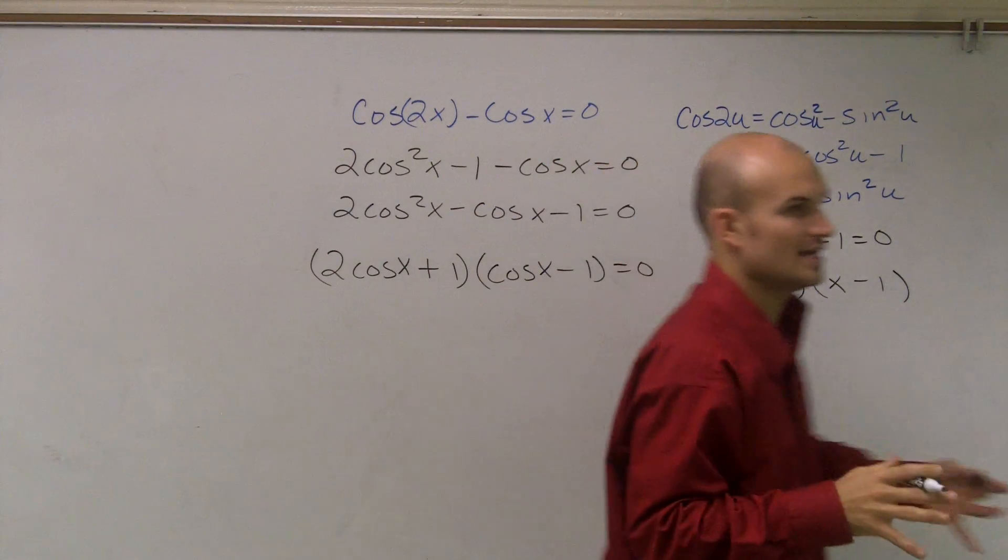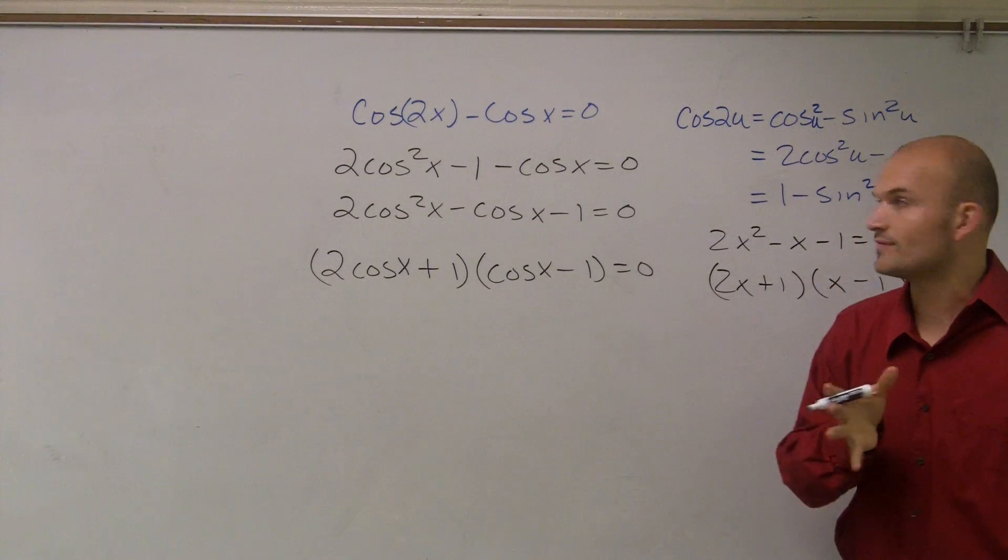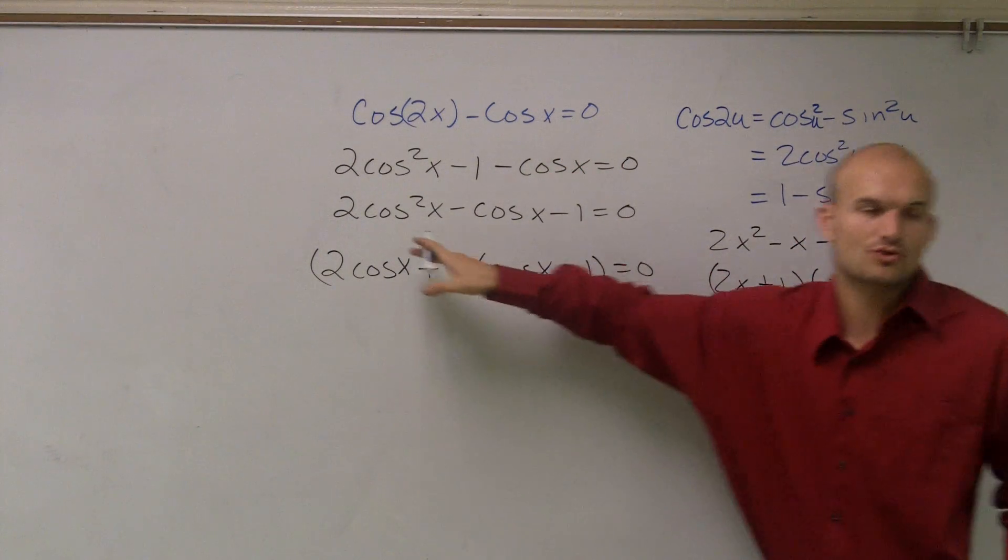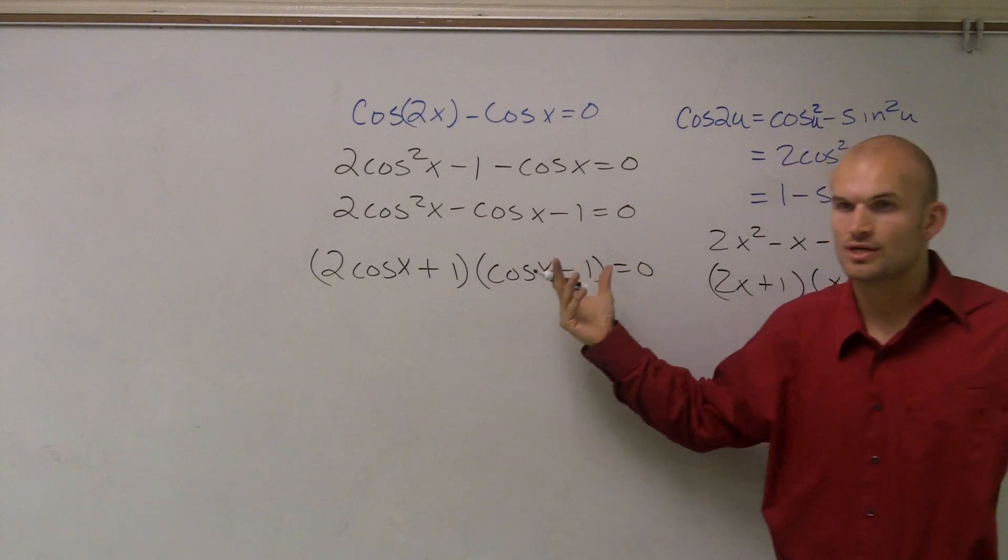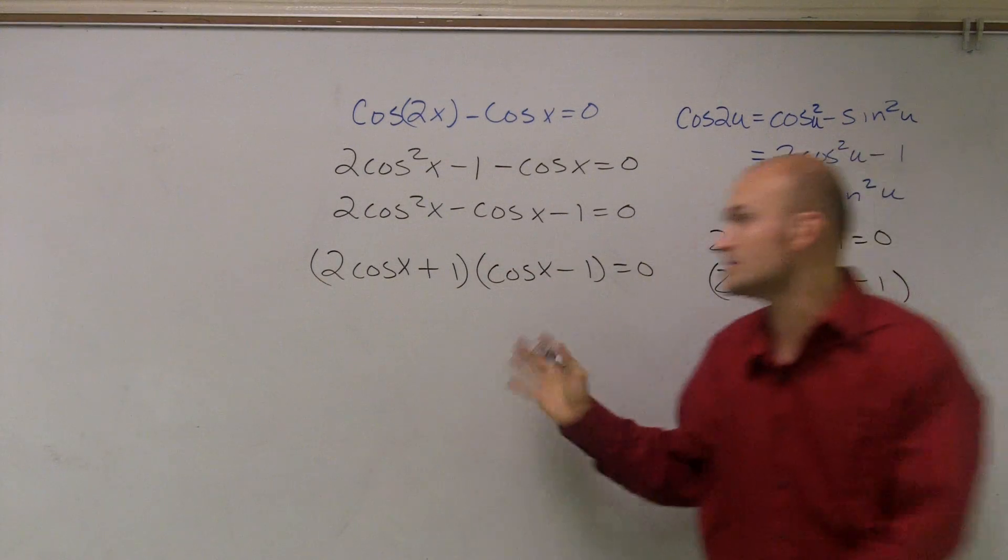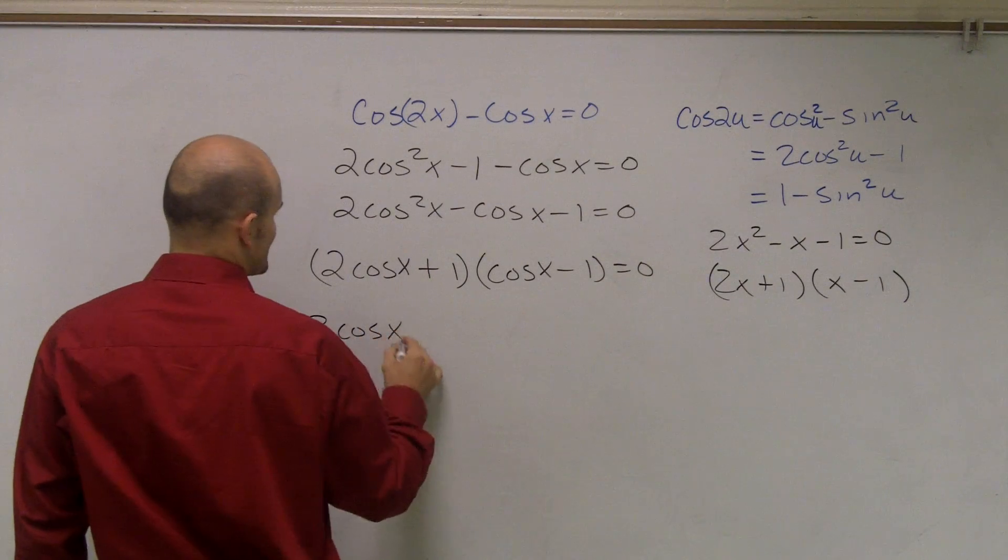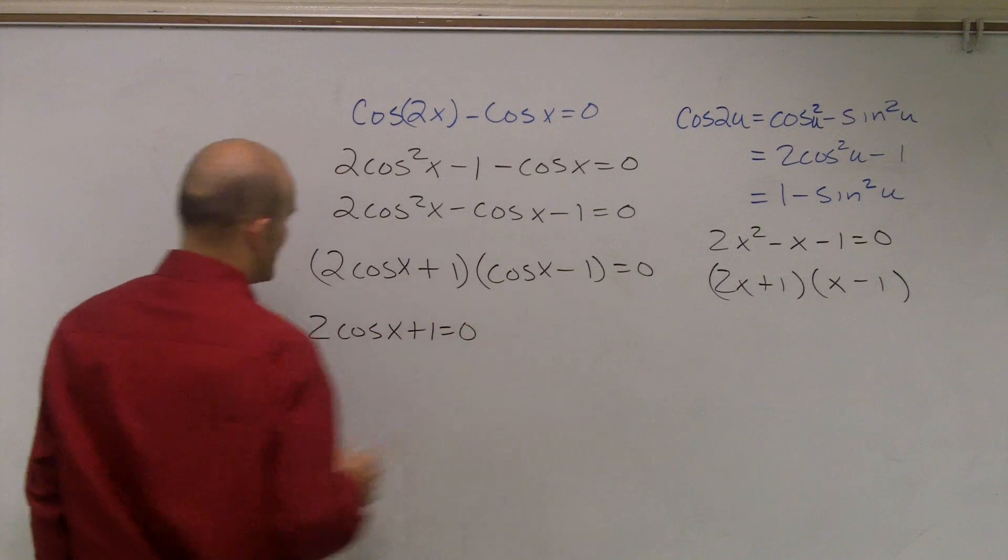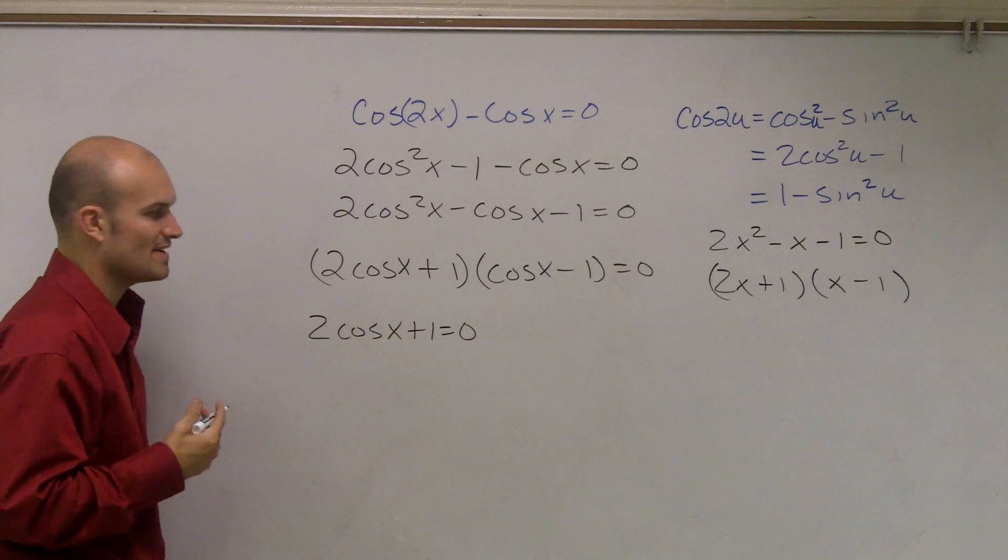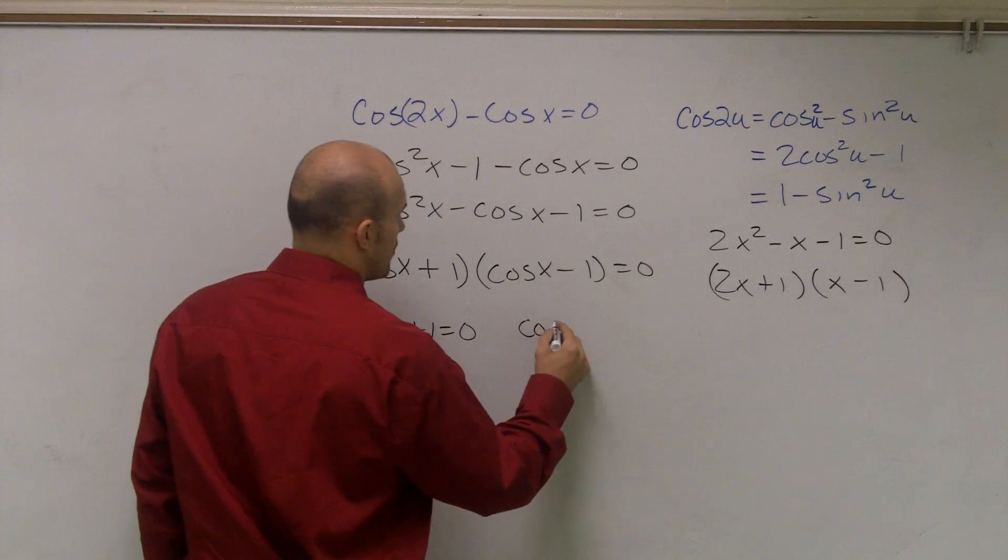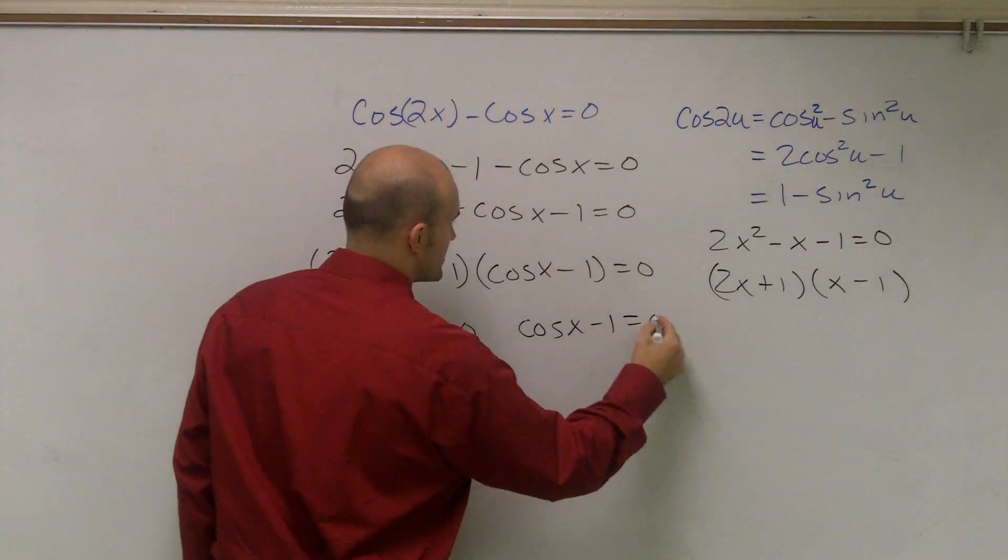So now what I've done is rather than isolate one of them by themselves, I've been able to create a product that equals 0. And we know when we have a product that equals 0, we can rewrite these both to equal, one of these has to equal 0, so we can rewrite them as 2 cosine of x plus 1 equals 0, or cosine of x minus 1 equals 0.